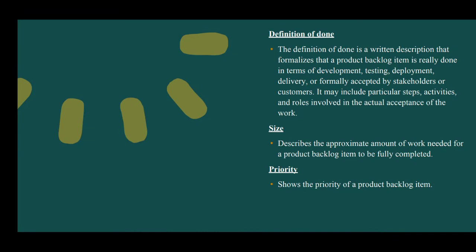Definition of done: the definition of done is a written description that formalizes that a product backlog item is really done in terms of development, testing, deployment, delivery, or formally accepted by stakeholders or customers. It may include particular steps, activities, and roles involved in the actual acceptance of the work.